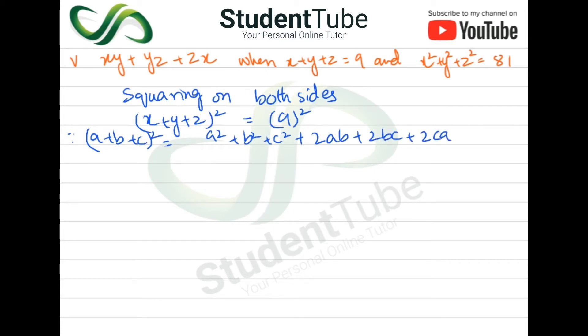Now we will convert a, b, c to x, y, z. So what will happen: x² + y² + z² + 2xy + 2yz + 2zx = 81.